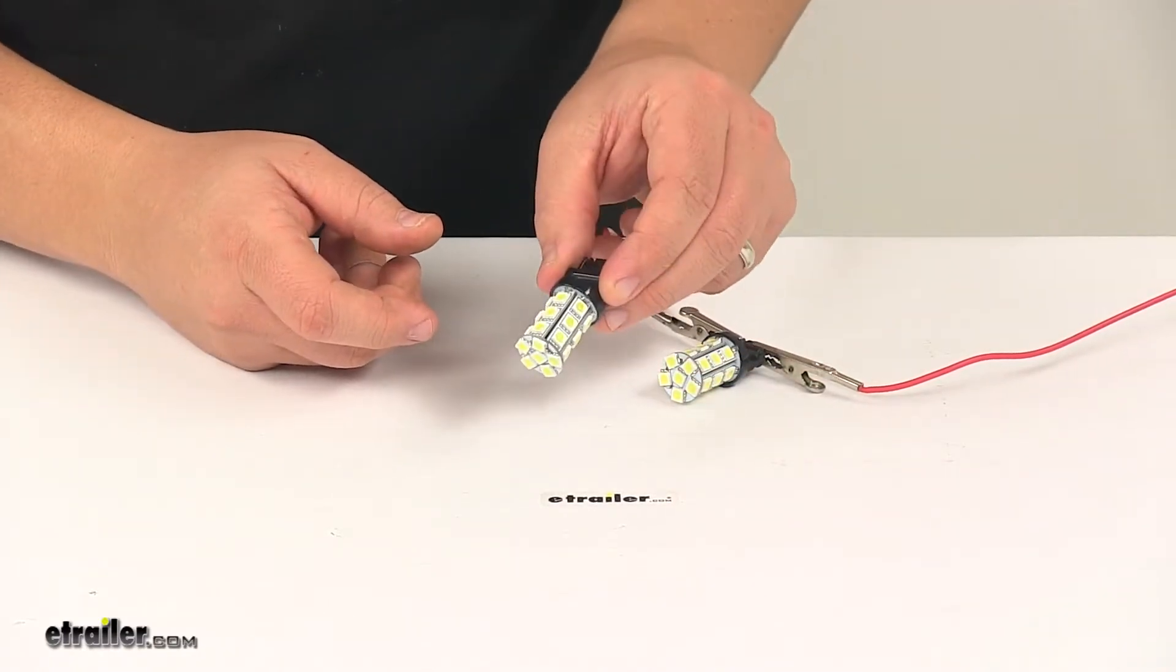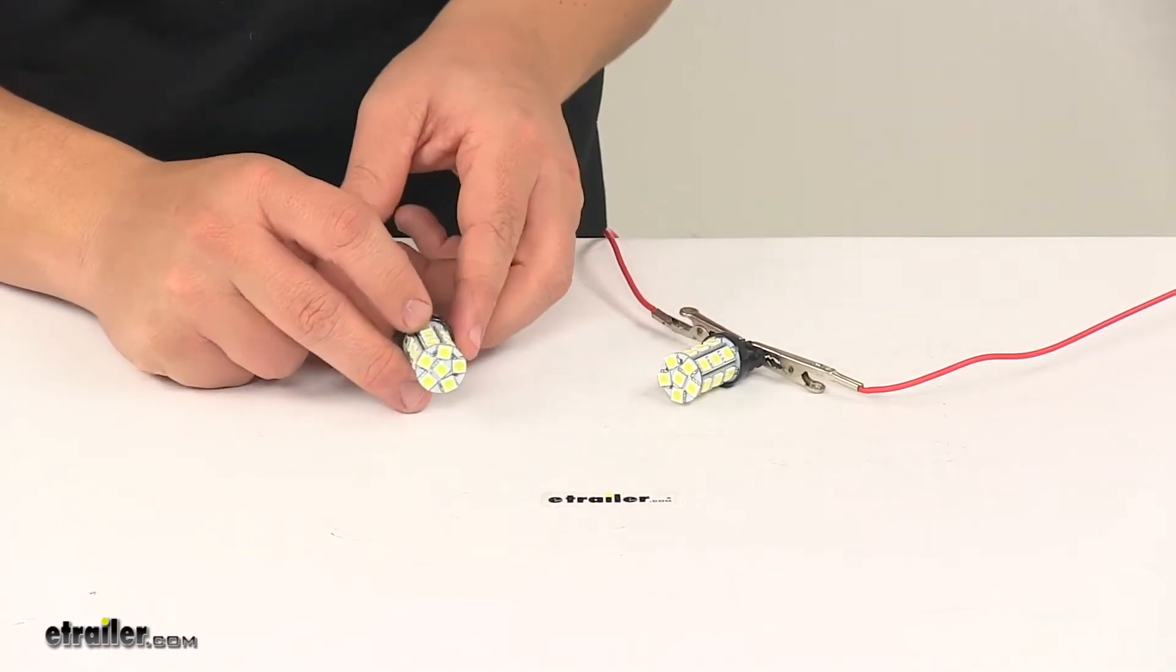These bulbs replace bulb numbers 3156A and 3456.